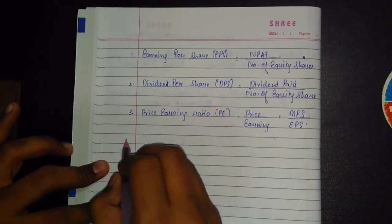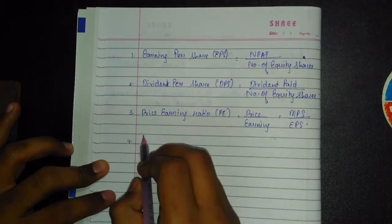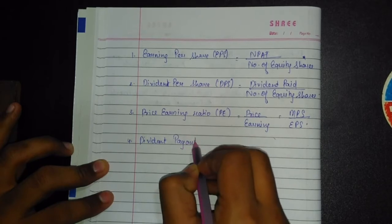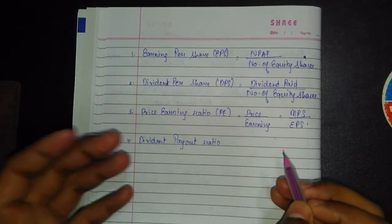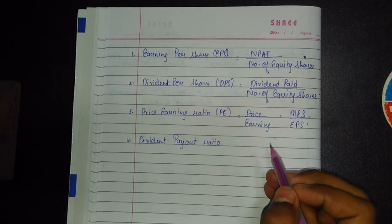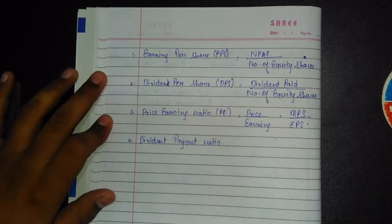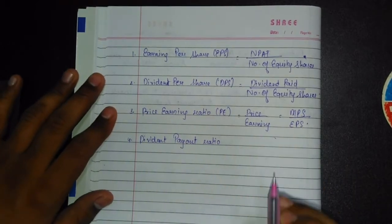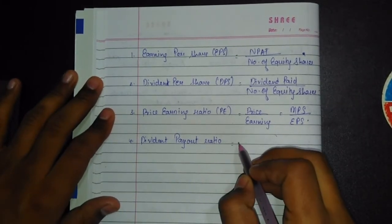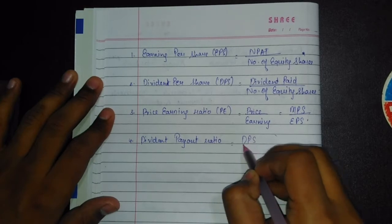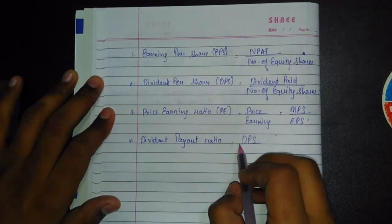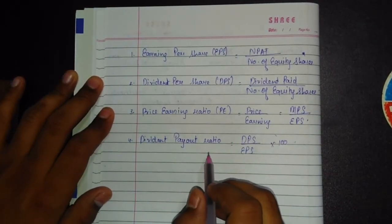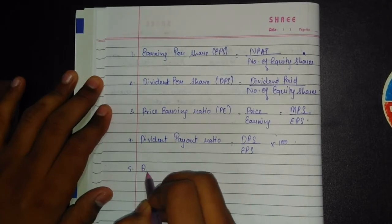Next is the Dividend Payout Ratio — this is very easy. Detailed explanations are given in the practice manual, so the focus here is on the formulas. Dividend Payout Ratio equals DPS (Dividend Per Share) divided by EPS (Earnings Per Share), multiplied by 100.